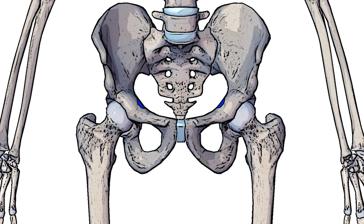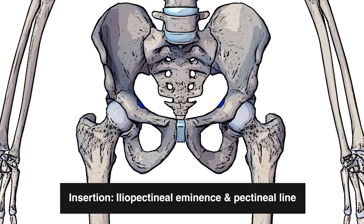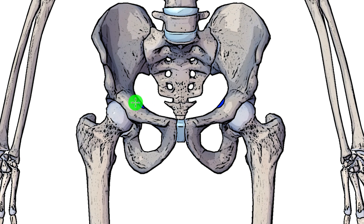Next you can see I've highlighted the insertion in blue either side here. That insertion is going to be on the iliopectineal eminence and also the pectineal line. The iliopectineal eminence is going to be more towards the lateral side of this blue area — it's a ridge on the top of the hip bone that marks the junction of the ilium and the pubis. Whereas the pectineal line is more towards the medial side, and it's a ridge on the superior ramus of the pubic bone.